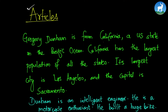Gregory Dunham is from California, a US state on the Pacific Ocean. California has the largest population of all the states. Its largest city is Los Angeles and the capital is Sacramento. Dunham is an intelligent engineer. He is a motorcycle enthusiast. He built a huge bike. Now, the question could be: what are articles?